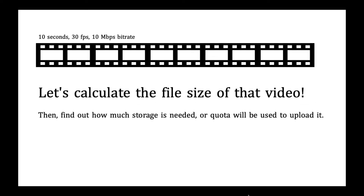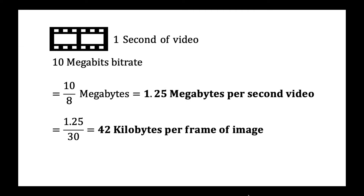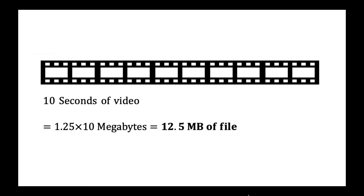Let's calculate the file size of that video, then find out how much storage is needed or how much quota will be used to upload it. For 1 second of video with 10 Mbps bitrate, we get 1.25 MB of video or 42 KB of image. For 10 seconds of video, we just multiply it by 10, so we get 12.5 MB of file.